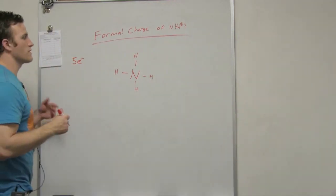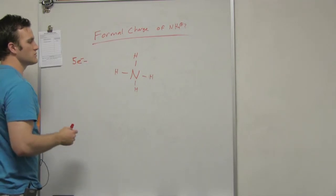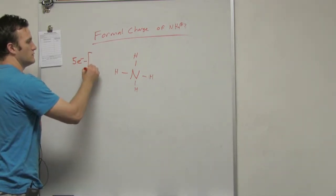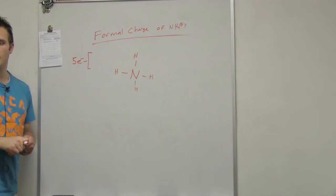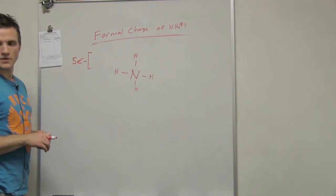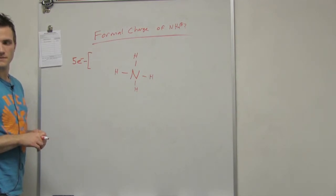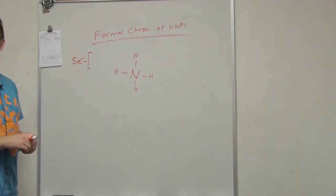So you start with the number that it brought to the table, and then you subtract what? Try not to look at your equation. Non-bonding atoms. Non-bonding electrons? Yeah, non-bonding electrons plus the number of bonds.